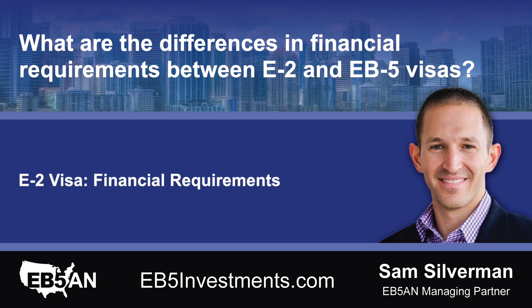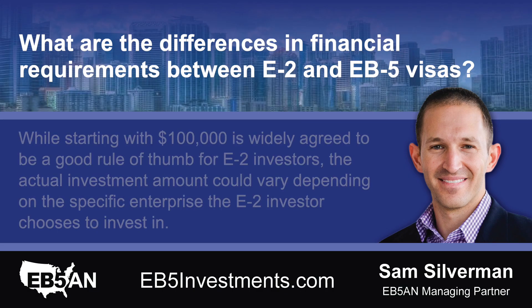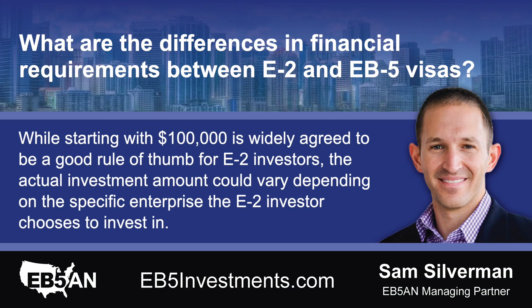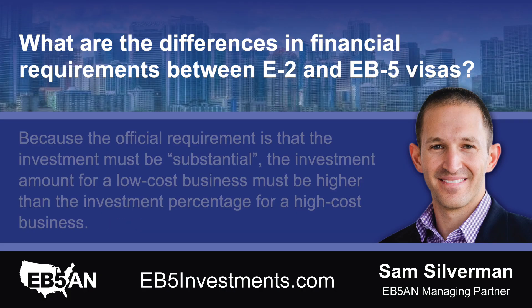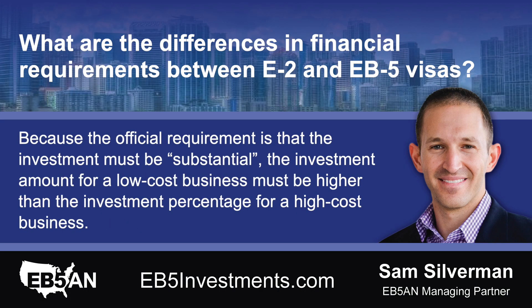E-2 visa financial requirements: While starting with $100,000 is widely agreed to be a good rule of thumb for E-2 investors, the actual investment amount could vary depending on the specific enterprise the E-2 investor chooses to invest in. Because the official requirement is that the investment must be substantial, the investment amount for a low-cost business must be higher than the investment percentage for a high-cost business.